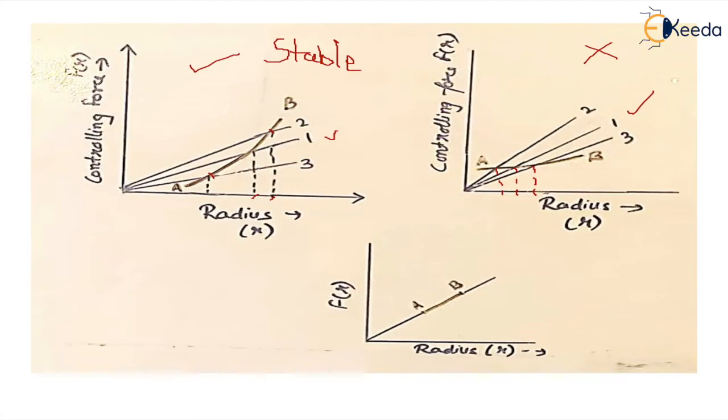And the third graph is showing the controlling force curve AB. These conditions usually arise in the case of spring-loaded governors. The speed represented by this straight line, the balls can take up any radius. So this condition is the condition of isochronism, where the range of speed is zero.